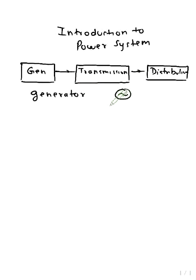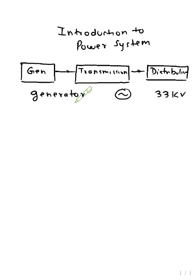The generator symbol represents a rotating machine which has a field part and an armature part. The voltage from the generator goes up to a maximum of 33 kV. Mostly we use AC generators, also called alternators or turbo alternators.